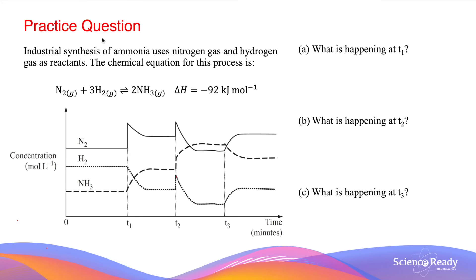That is changes in concentration of substances, changes in pressure or volume of the system, and lastly, changes in temperature. Each of the changes has its own characteristic appearances on these concentration versus time graphs.